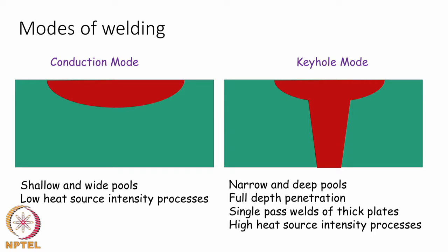In situations like plasma welding, laser welding, and electron beam welding, a mode called keyhole mode is possible. Keyhole mode is achieved when the heat source intensity is very high, and it is attractive because you can join very thick plates using a single pass due to deep penetration of the heat source through the thickness of the weldment.